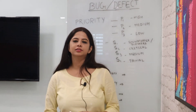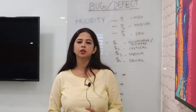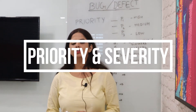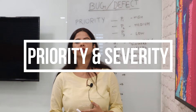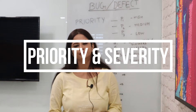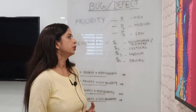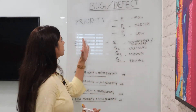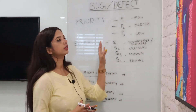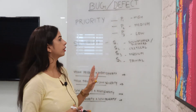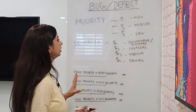Hello everybody, this is Kiran. Today we are going to talk about priority and severity associated with any bug. There are two important terms related to a bug: priority and severity.